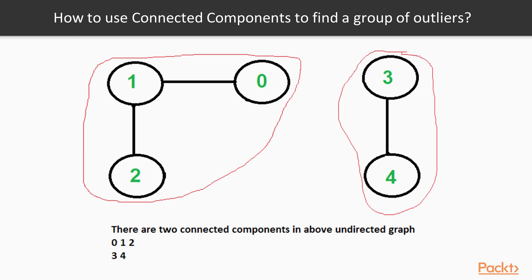There is no way to travel from the first connected component to the second — we cannot go from vertex 0 to vertex 3. In a social network, connected components represent closed circles of friends. For example, vertex 0 could be Mike, 1 is Tom, 2 is Roger, and 3 and 4 are Michael and John. These two circles of friends are not connected — they don't know each other — and using that fact we can find out which groups know each other and identify anomalies.